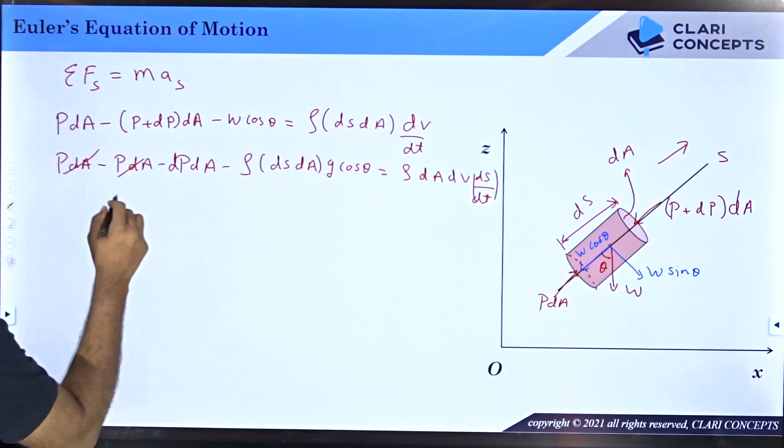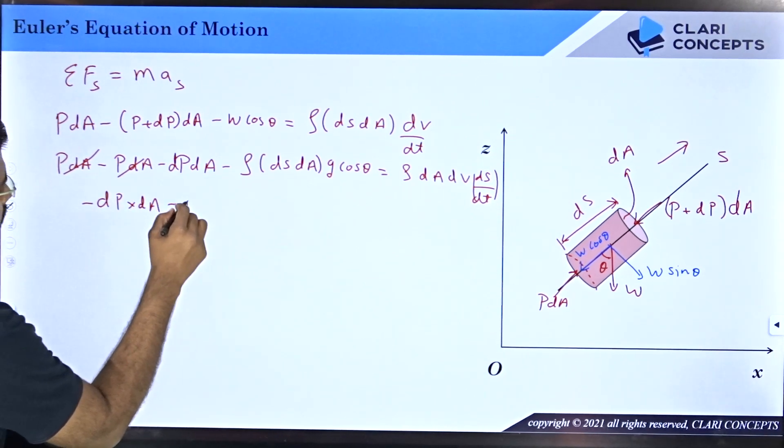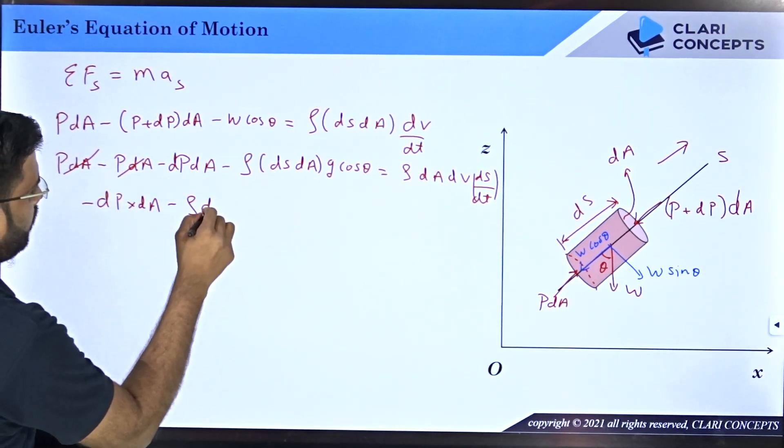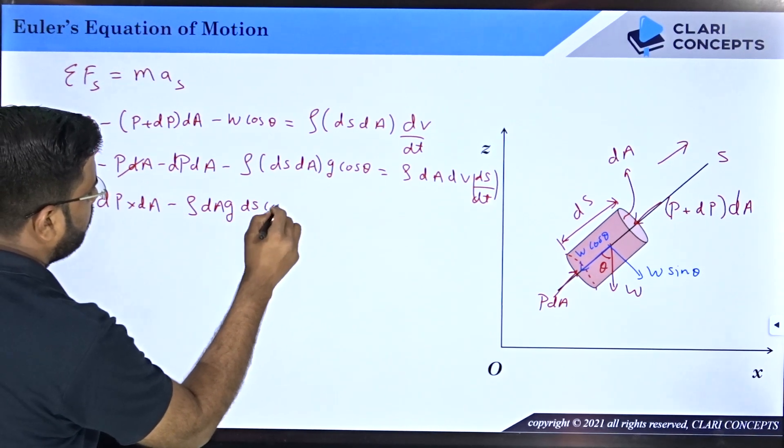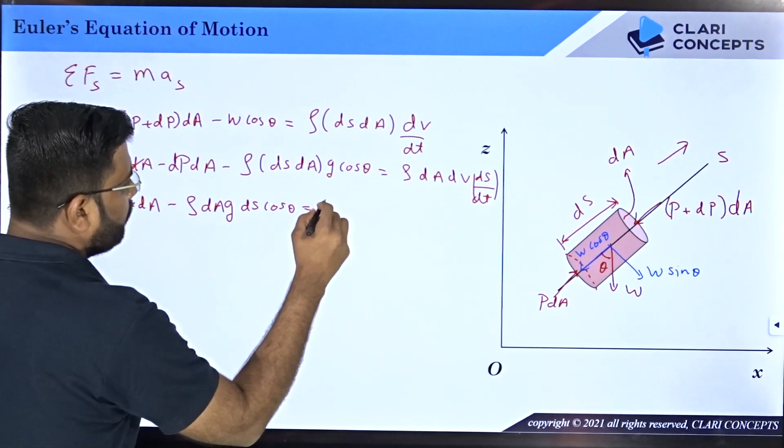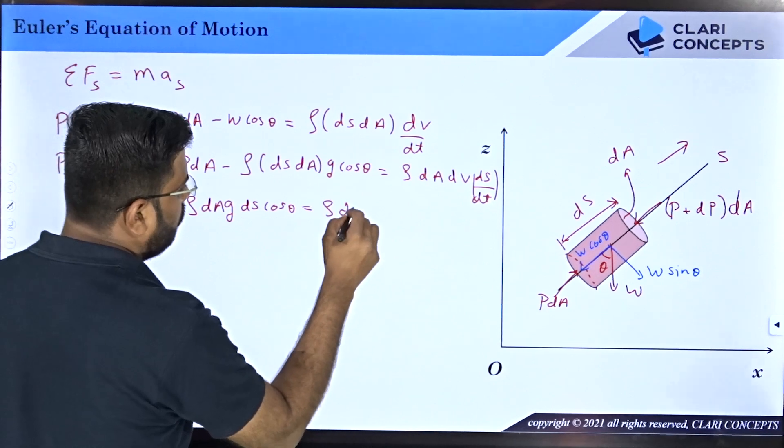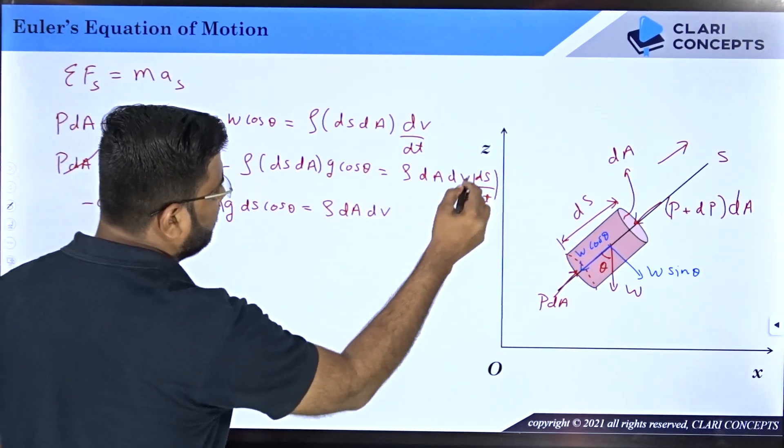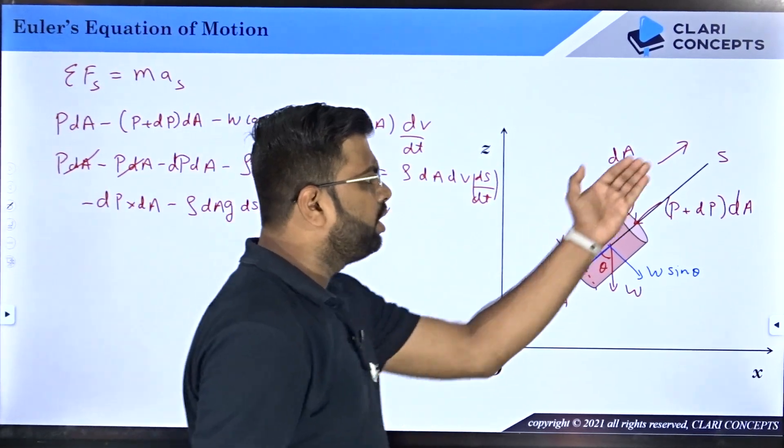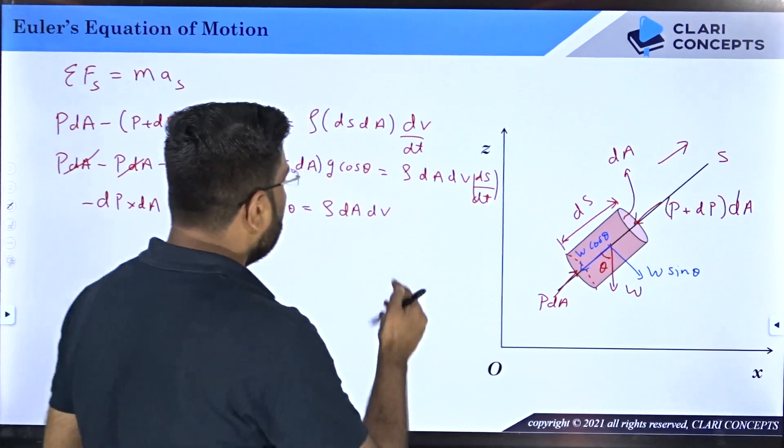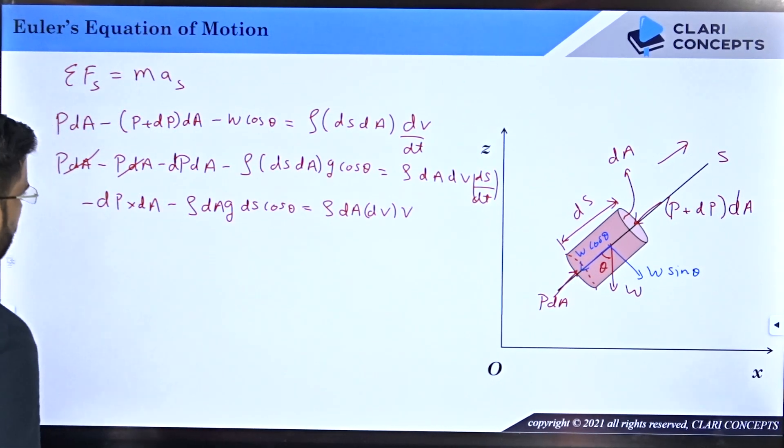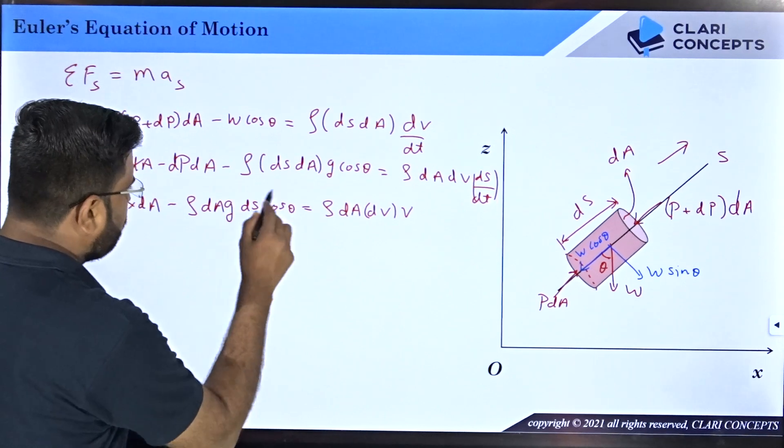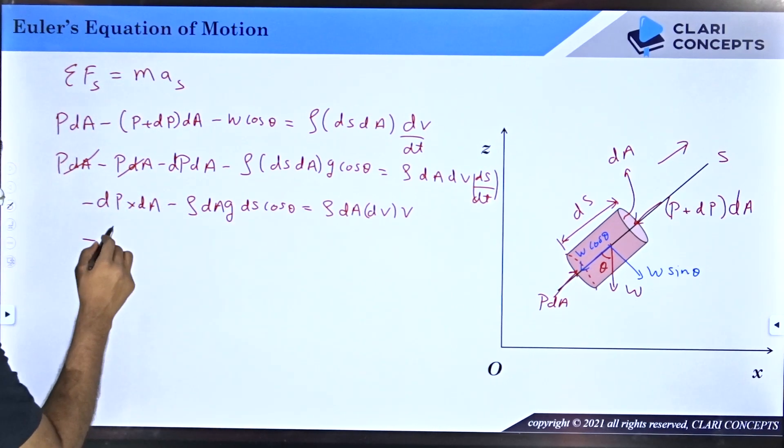Now P dA gets cancelled. Minus dP into dA minus rho dA g, I will take dS on the right hand side. So dS cos theta equals rho dA dV. What is dS by dt? It's the change in position along S direction with respect to time, which is nothing but velocity V.